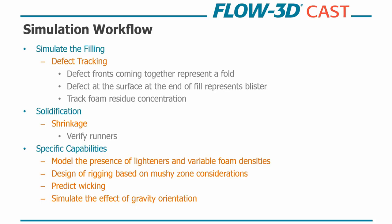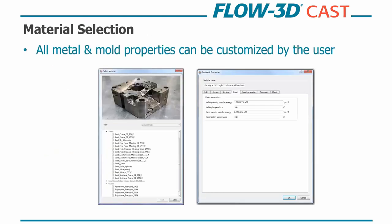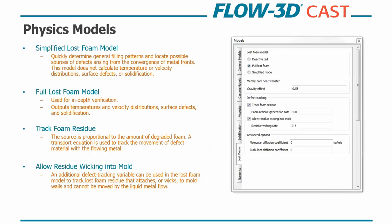From the filling simulation, we take that data and then run a solidification simulation. And that's to look at shrinkage, and we're verifying our runners. And then some specific capabilities within Flow 3D Cast is we can model the presence of lighteners and variable foam densities. We're going to maybe look at mushy zone considerations and design the rigging along that. We can also predict wicking, which is foam residue sticking to the cavity or the walls of your mold. And then you can also simulate the effects of orientation due to gravity with your mold. So as mentioned earlier, first, we need to select our relevant materials. This is mold and metal properties. So Flow 3D, when you click on the lost foam workspace, we're going to bring up all the relevant mold and material properties that you could need. Also noted that this is fully customizable. So any of these can be adjusted or based on your own material testing inputted by the user. So it's not a black box by any means.